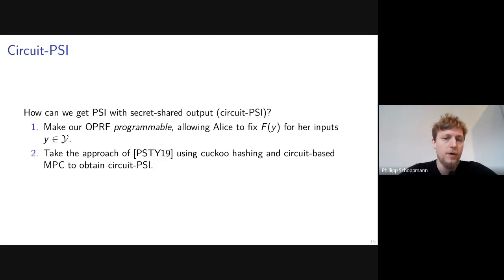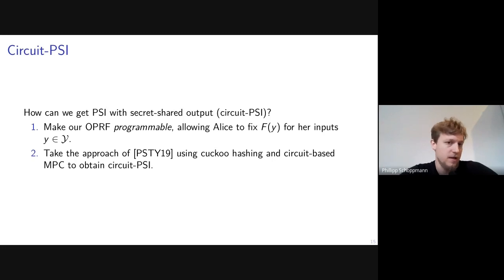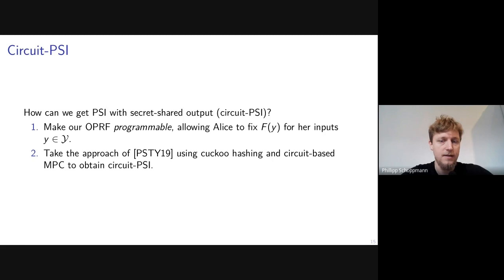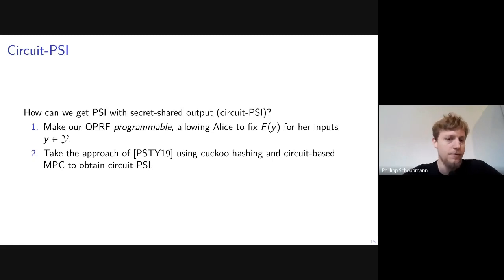We also want a PSI variant where the output is secret-shared, useful when the two parties want to perform subsequent computations on the output without learning the intersection elements themselves — for example, computing their sum. An approach from 2019 is to make the OPRF programmable, meaning Alice can fix the OPRF output for her inputs Y to a chosen value. With such a programmable OPRF, we can use cuckoo hashing and a generic circuit-based MPC to obtain a circuit PSI protocol, and we show how to make our OPRF programmable.